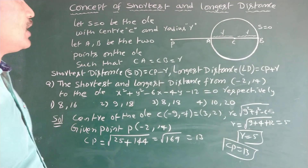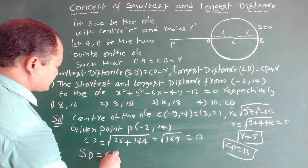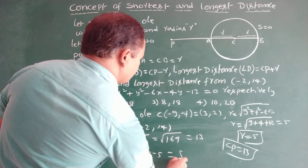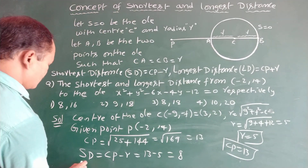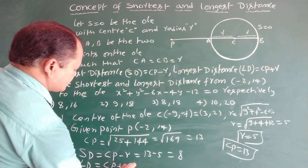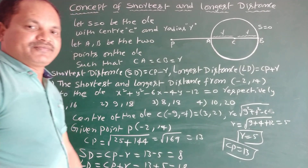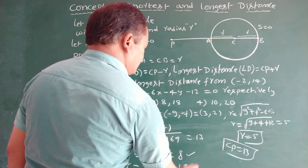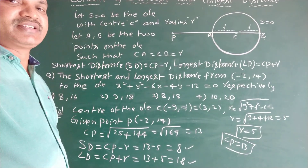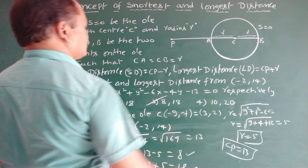Now we find the shortest distance: SD = CP minus R = 13 minus 5 = 8. The longest distance: LD = CP plus R = 13 plus 5 = 18. Therefore the shortest distance is 8 and the longest distance is 18, giving us 8 comma 18. The third option is correct.